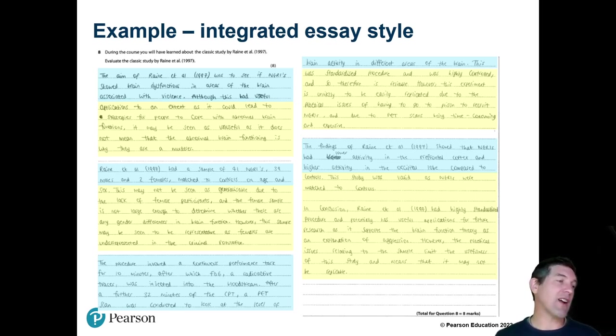The AO1 is actually stronger here, that's at level three, accurate knowledge of the procedure and results not quite thorough enough for level four, the top mark band. This goes to show that actually you don't need to write that much particularly for the AO1 to get into a decent mark band.